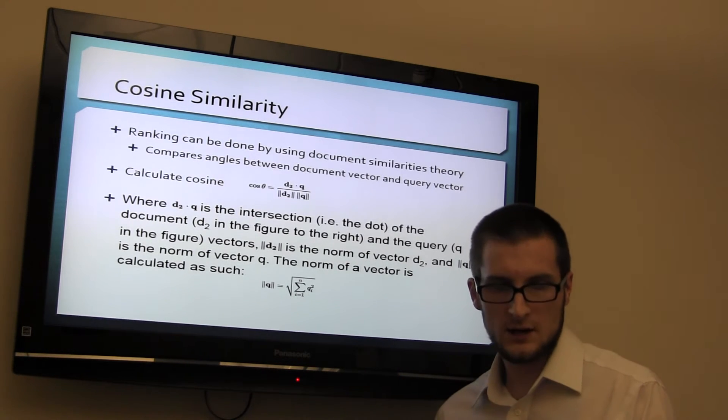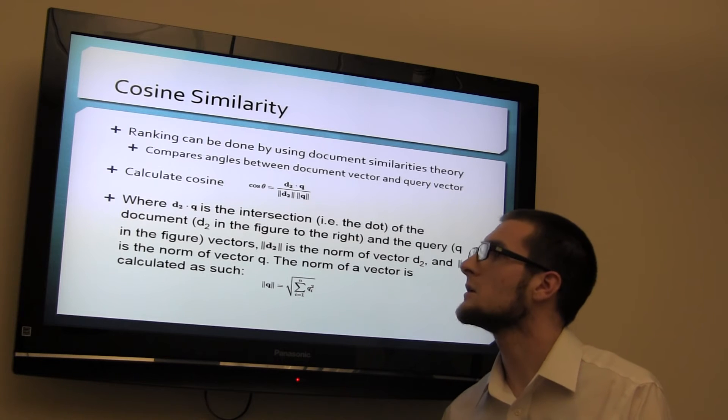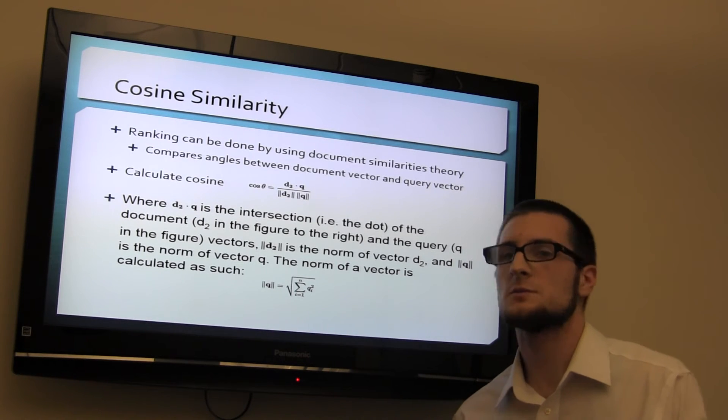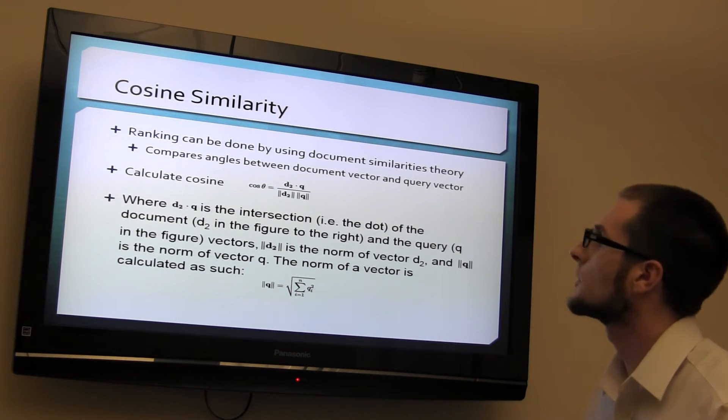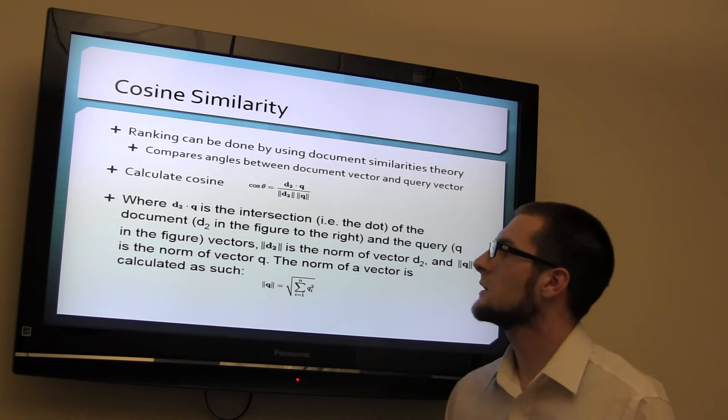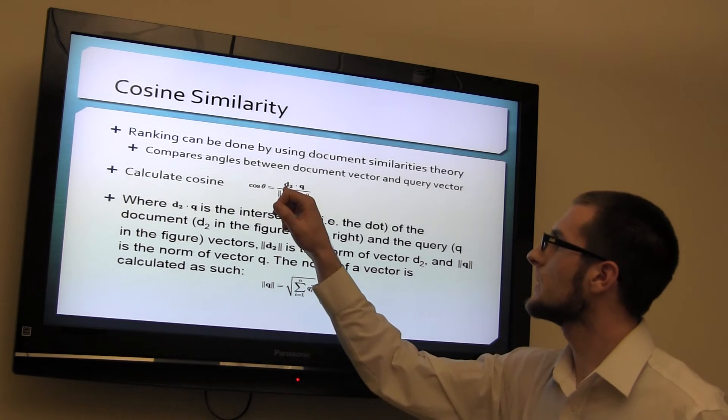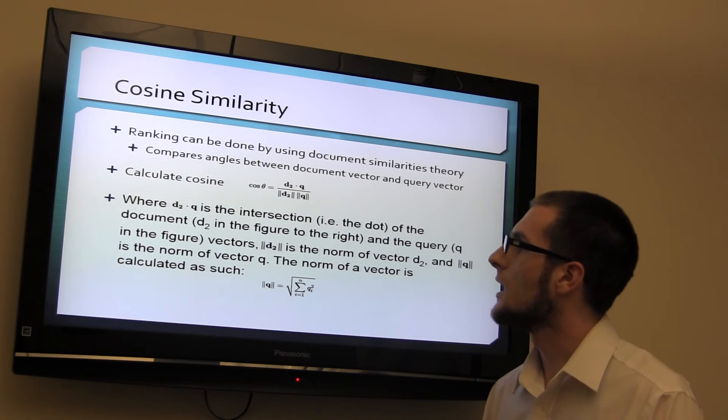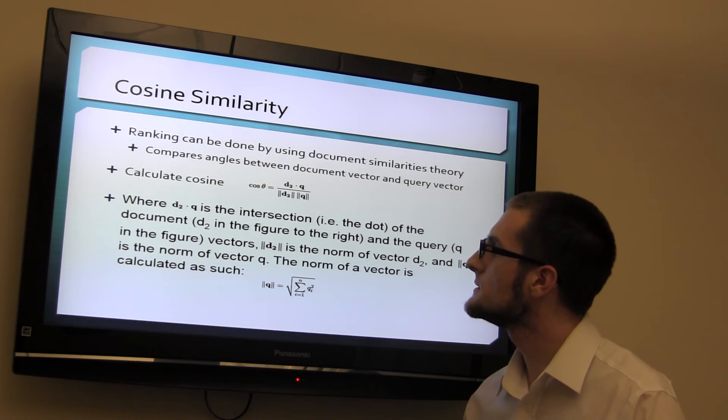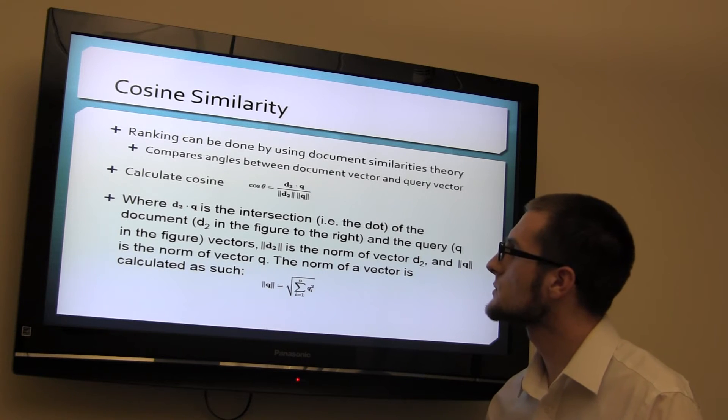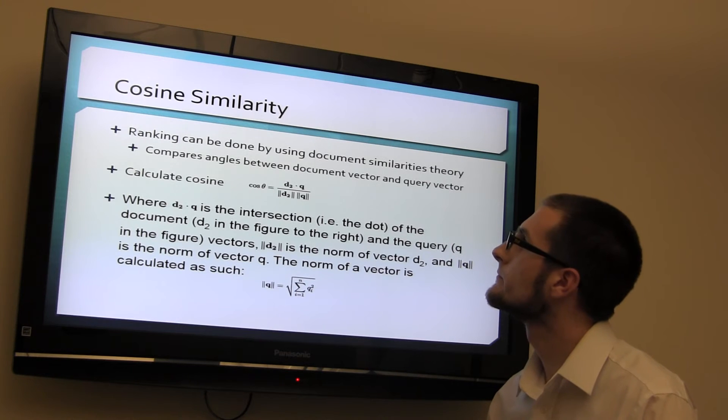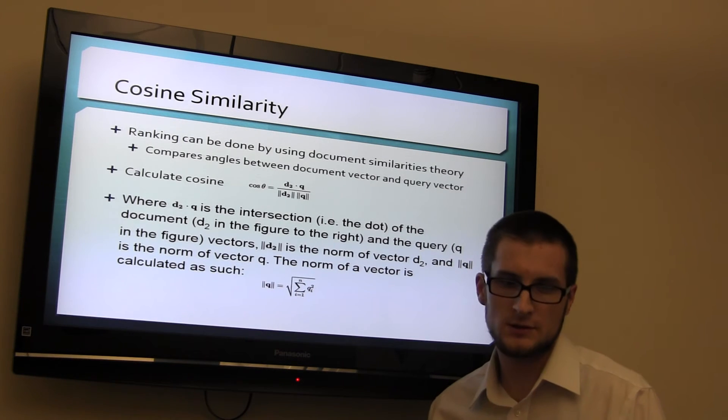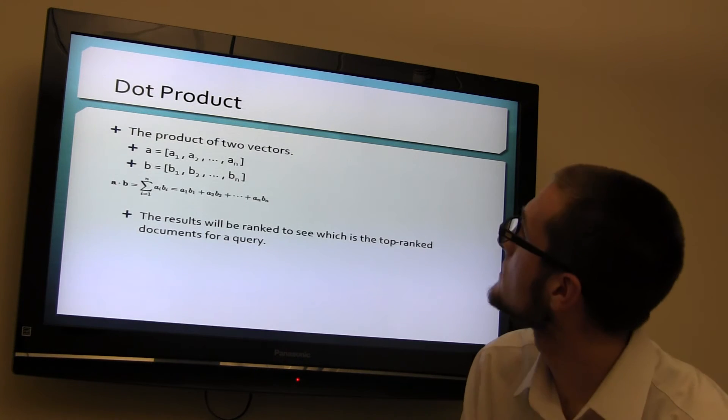Going off of that, cosine similarity works kind of hand in hand with the vector space. The ranking can be done by using document similarities theory. It compares angles between document vector and the query vector. In order to calculate cosine, you're going to take the document times the query. Down here is an example where D2 times query is the intersection, or the dot, it's actually called the dot product.